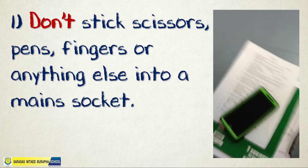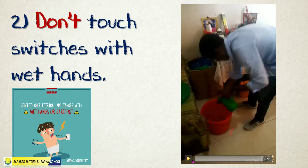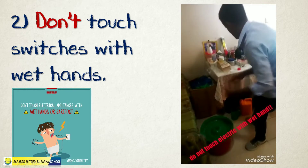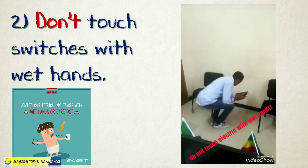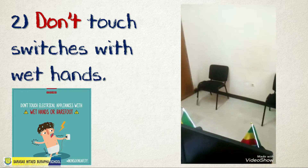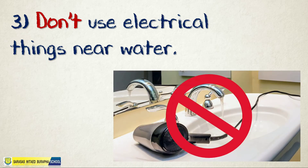Number two: don't touch switches with wet hands. Make sure your hands are dried before using sockets or plugging anything in. Number three: don't use electrical things near water, because that is very, very dangerous and could cause an accident.